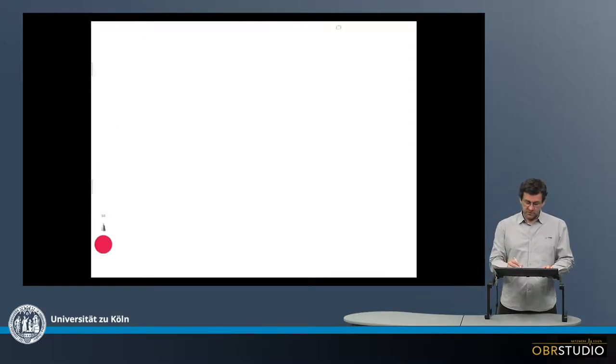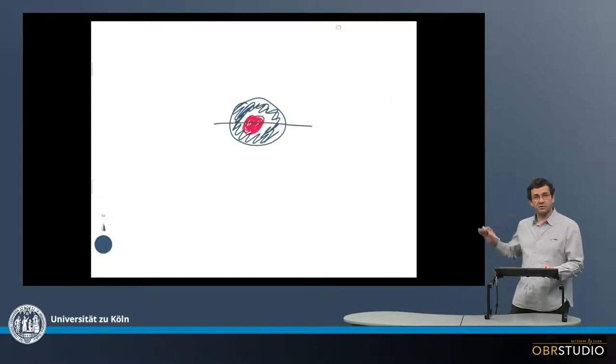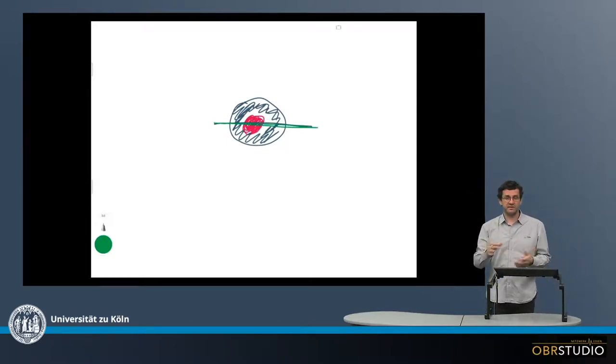So let's assume we have a chondrule here with this red olivine core, which is surrounded by a blue pyroxene rim. Now when we cut this chondrule in the middle, we are looking basically from the side onto this chondrule. If we cut it here and then have a section, we see a nice zoned chondrule.